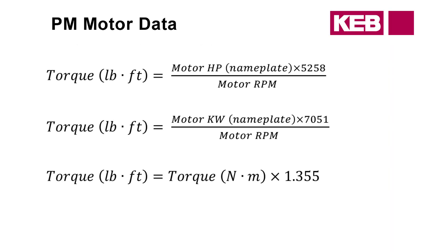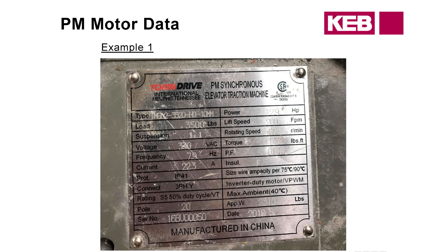Here are a couple of equations you can use to figure out torque based on the information you're given. For the most part in the US, motor data power should be in horsepower, but occasionally you'll run into kilowatts and will need to convert. Likewise, if torque is given in Newton-meters, you may need to convert to pound-feet — just multiply by 1.355.